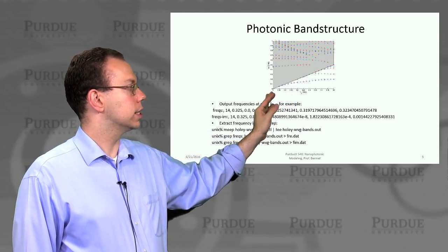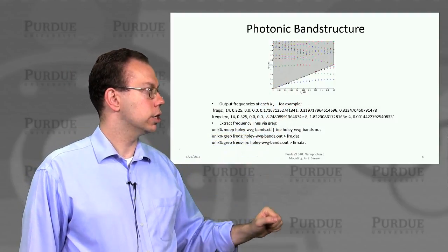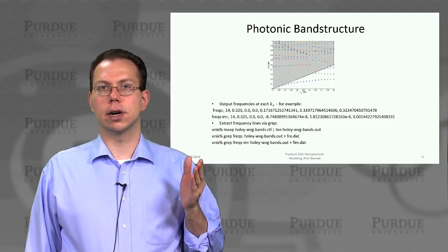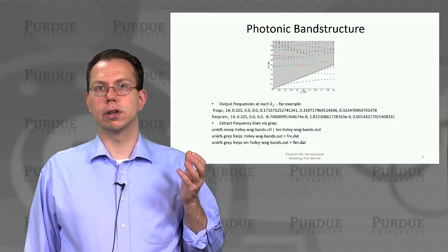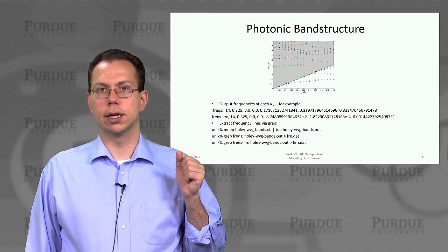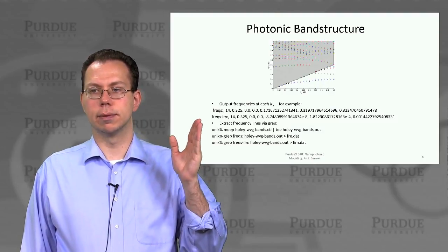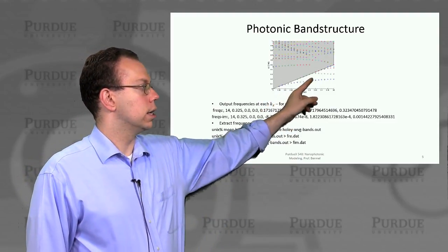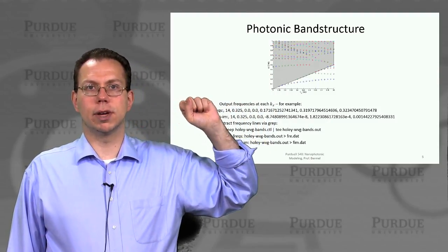And then you can see that actually I have two regions in this band structure, one that's light and one that's dark. And so the one that's dark is called the light cone. And so this is like the escape cone for light where basically kx is small enough so that any mode that was guided in the high index structure could escape into air. Anything below the light line, which is this diagonal line here